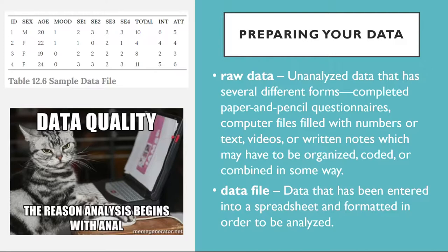Professional researchers usually keep a copy of their raw data and consent forms for several years in case questions about the procedure, the data, or participant consent arise after the project is completed. Next, you should check your raw data to make sure that they're complete and appear to have been accurately recorded, whether it was participants, yourself, or a computer program that did the recording.